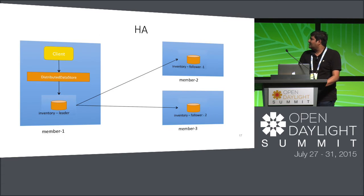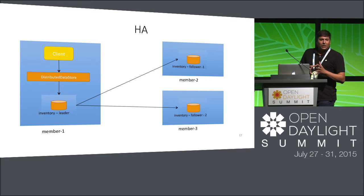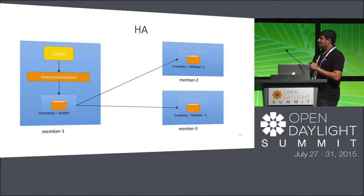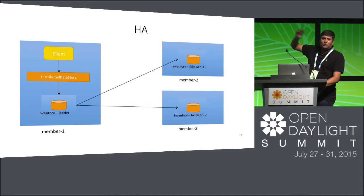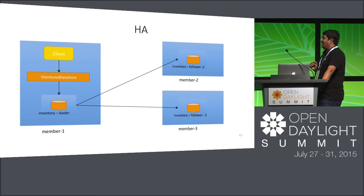For high availability: if I had inventory on one node and that node failed, I don't want to lose access to my inventory data. So I distribute it across the cluster — I replicate it. On member one I have the leader of inventory, and member two and member three are followers with the exact same data. If member one goes down, one of the other two nodes takes over as leader.